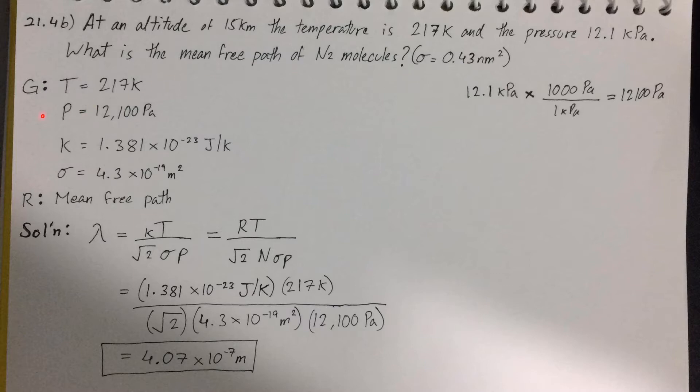So first, you must write the given. Temperature is equal to 217 kelvin. And the pressure, I converted it into pascals, giving me 12,100 pascals. Next, I wrote the Boltzmann constant k, as it will be used later on in the solution.